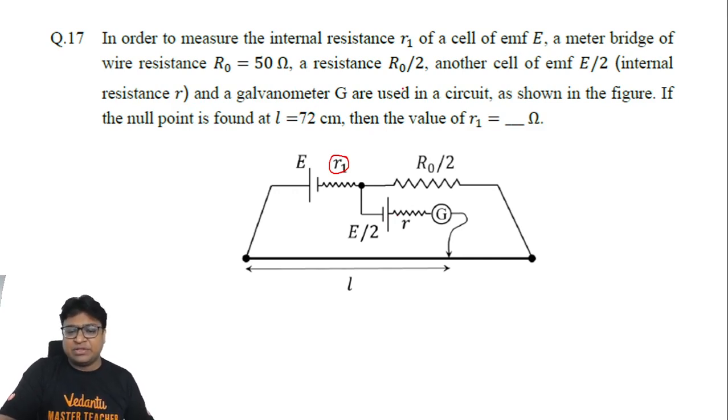First of all, if this length is 72 centimeter and this entire length was equal to one meter, that means 100 centimeter, then the first and foremost thing that we can do is: 50 ohm divided by 100 centimeter means we have a resistance of 0.5 ohm per centimeter. That means the resistance of this part of the wire would be 0.5 into 72, which is 36 ohms.